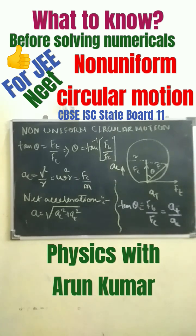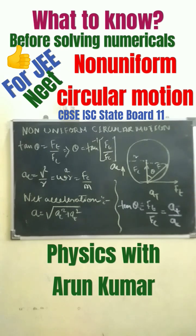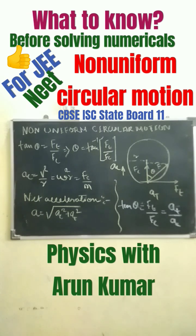From the given diagram, we can see that tan θ equals F_t divided by F_c. Also, centripetal acceleration equals v²/r, which equals centripetal force divided by m. Hence, net acceleration equals the square root of centripetal acceleration squared plus tangential acceleration squared, and tan θ can also be written as a_t divided by a_c.